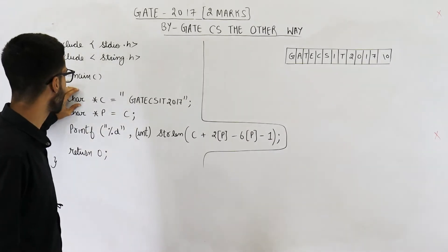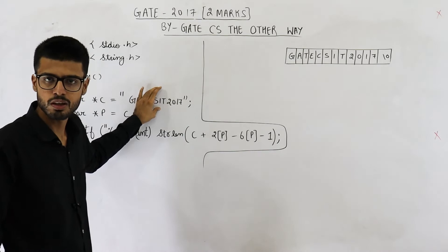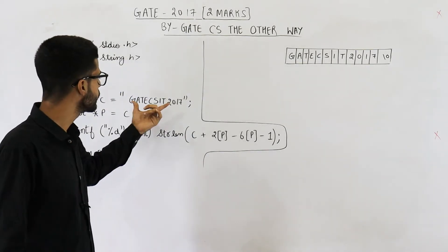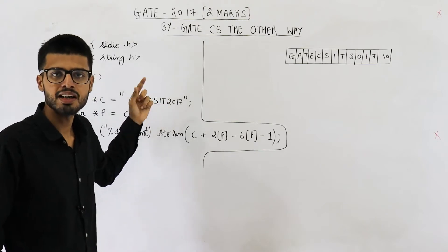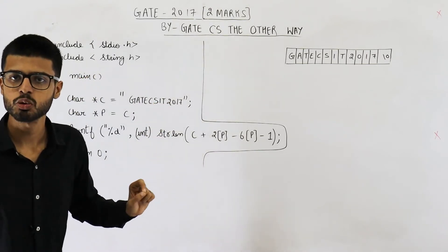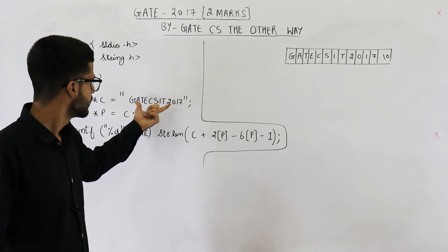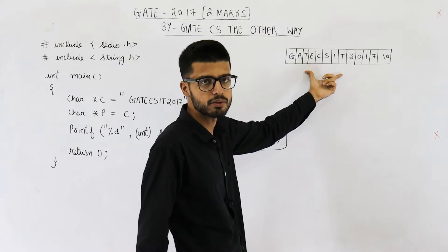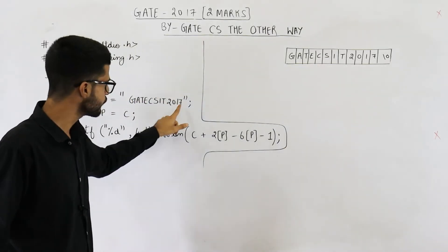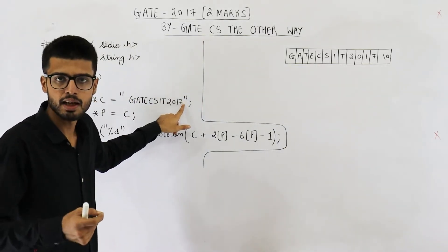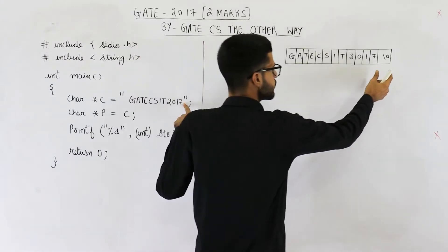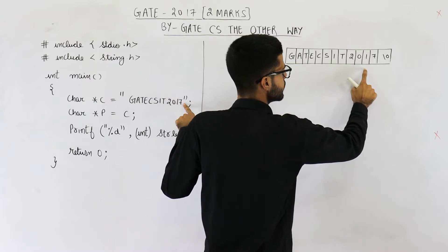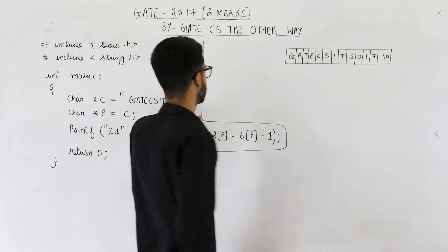First line says, char star c equals GATE CSIT 2017 which is written in double quotes. Now whenever you write some string in double quotes, it is a string constant and its value cannot be changed. This will be declared in read-only section of the code. Suppose it is declared here. Even if you don't use a null character in ending, a null character will be added automatically. So GATE CSIT 2017 and it will be null terminated.